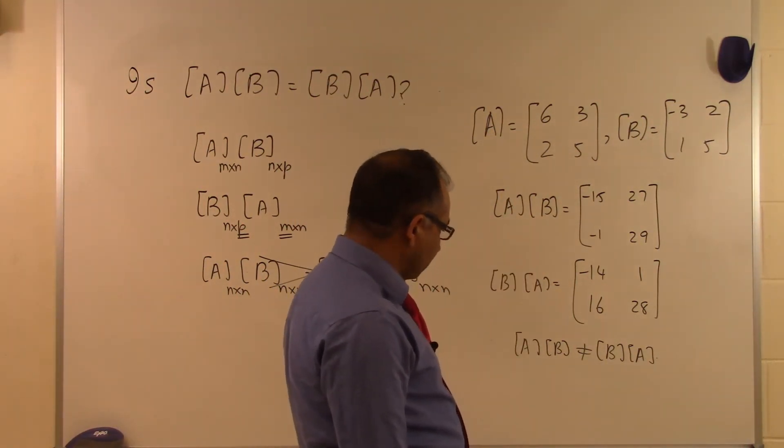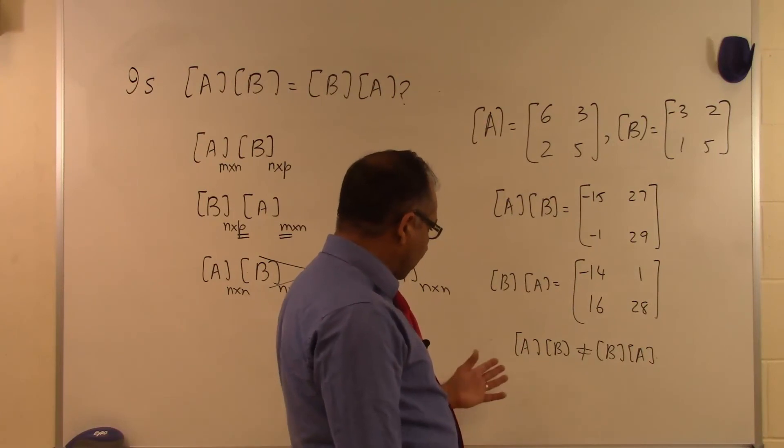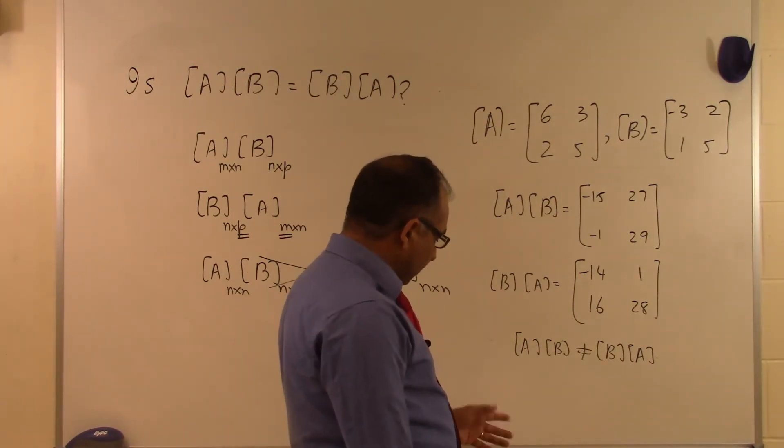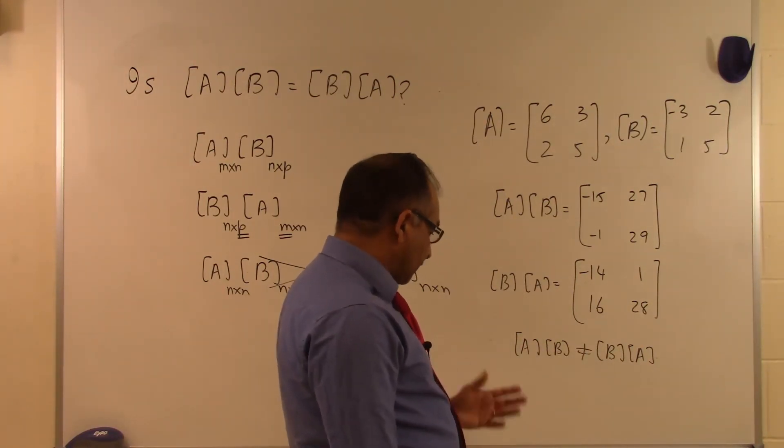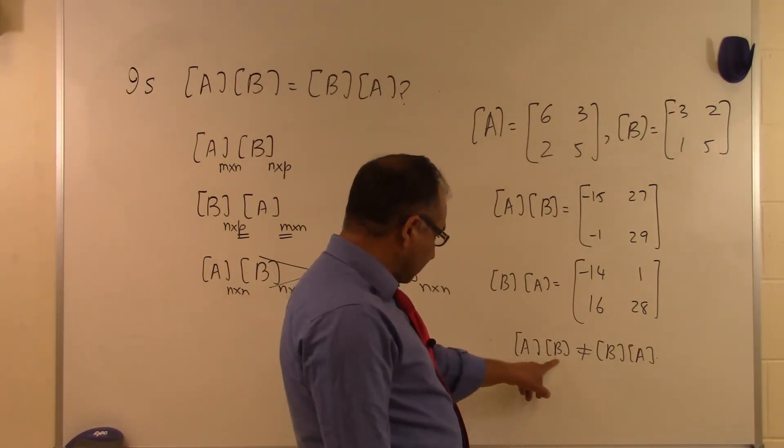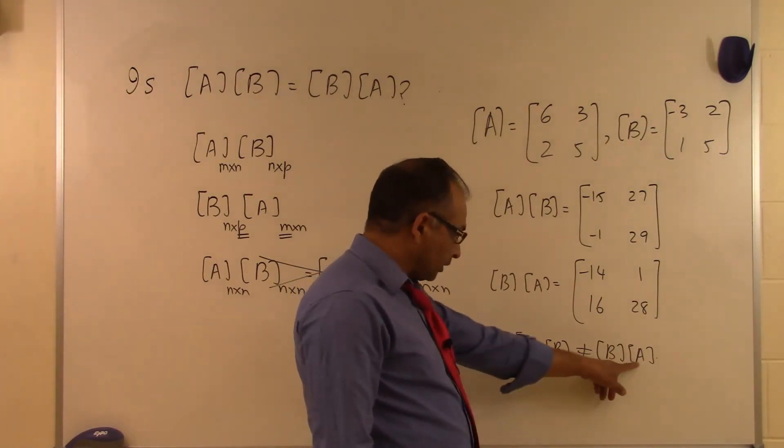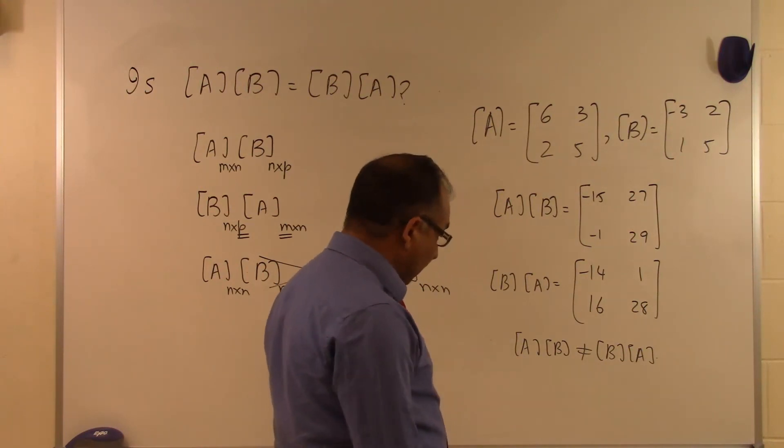But there are cases where A times B will be equal to B times A. That will be more clear when we see some special cases where, let's suppose this matrix is the inverse of that matrix, or this matrix is the inverse of that matrix. And then that will be true.